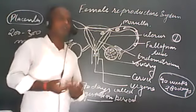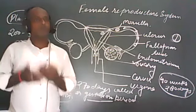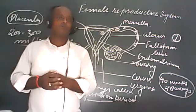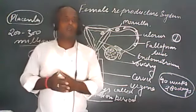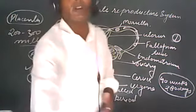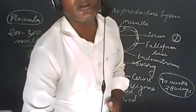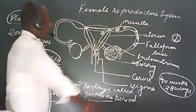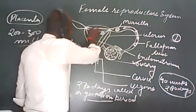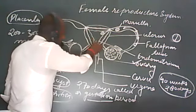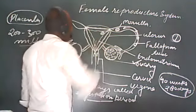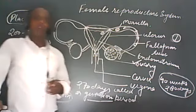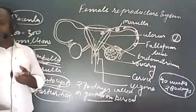Now we have to discuss what will happen when there is no fertilization in the female reproductive body. Once more let us see the structure of the female reproductive organ. This is the uterus portion, and inside there is a lining called the endometrium. This inner lining of the uterus is called endometrium, and it is a highly vascular portion.